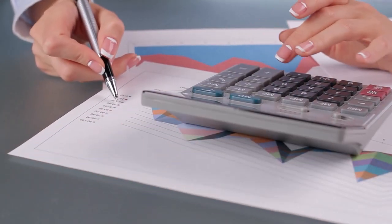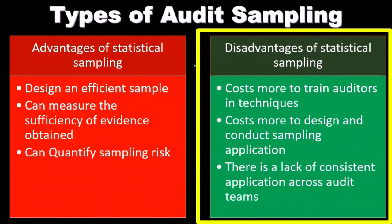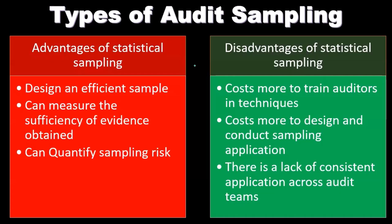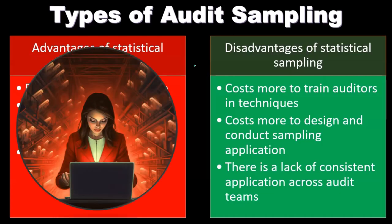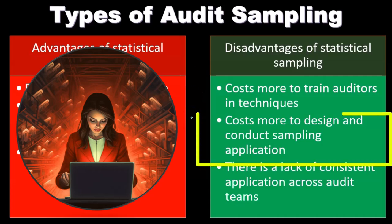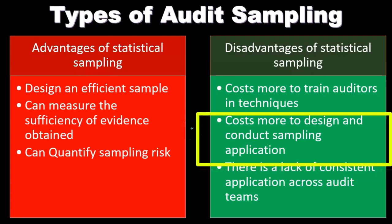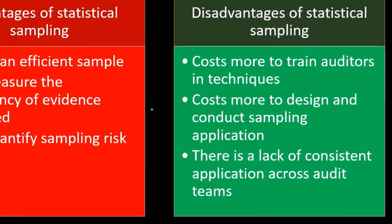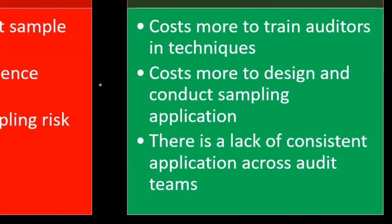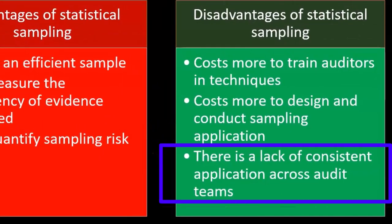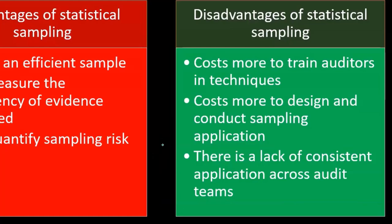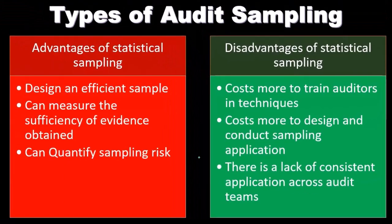Disadvantages of statistical sampling: it will cost more to train auditors in the techniques, as statistics isn't the easiest thing to do, and there are many problems that can arise when applying statistical sampling. It will also cost more to design and conduct the sampling application — there must be a cost-benefit analysis. There is also a lack of consistent application across audit teams, whereas non-statistical sampling with a set of general rules might actually be more consistently applied across different teams.